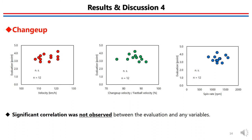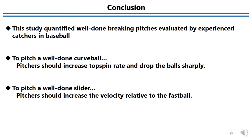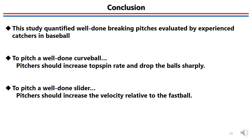For the change-up, no significant correlation was observed between the evaluation and any variables. The data range of both velocity and spin rates of change-ups measured in this study was narrow compared to other pitch types, which is one of the reasons why no significant correlation was found. In conclusion, this study quantified well-done breaking pitches as evaluated by experienced catchers. Pitchers should increase the topspin rate and sharply drop the ball to pitch a well-done curveball, while pitchers should increase the velocity relative to the fastball to pitch a well-done slider.